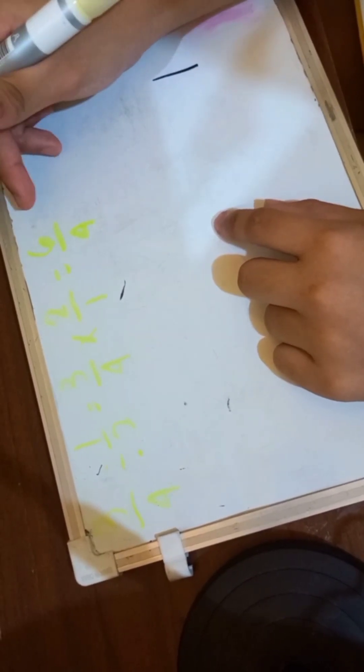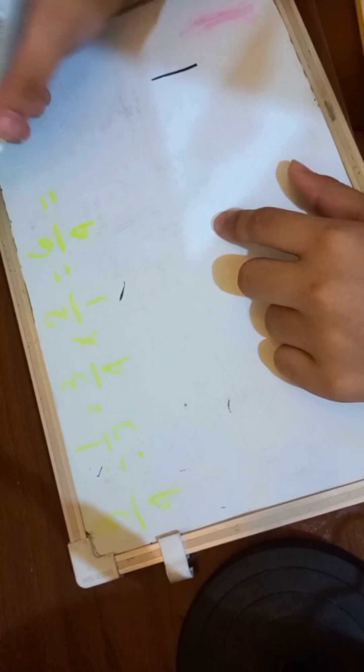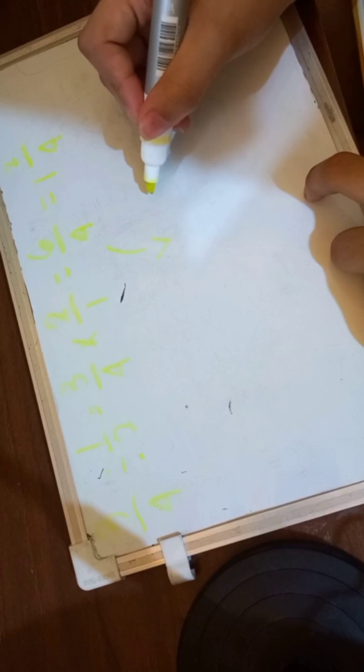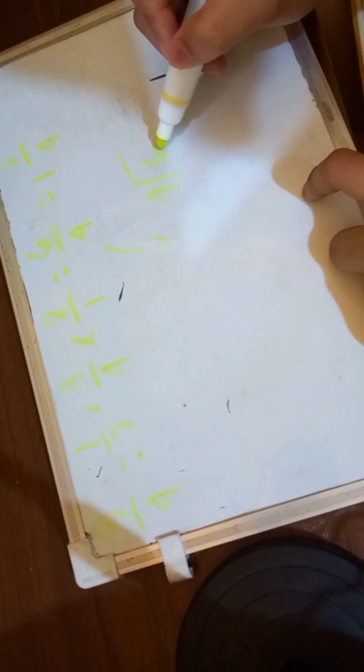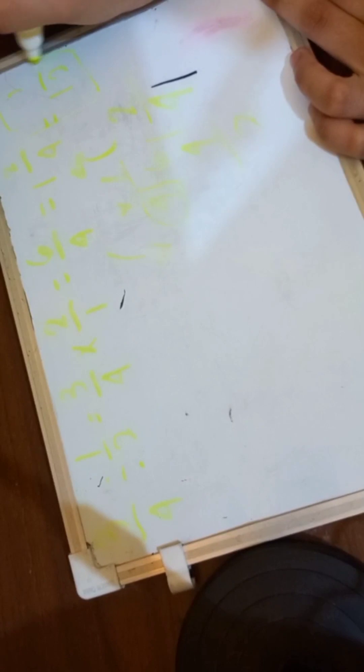So what we have here is going to be a mixed number: 1 and 2 over 4. To explain: 6 divided by 4 is 1. 1 times 4 is 4, remainder 2. So 1 is the whole number, 4 is the denominator, and 2 is the numerator. We then simplify 1 and 2 over 4 to 1 and 1 half. So this is our final answer.